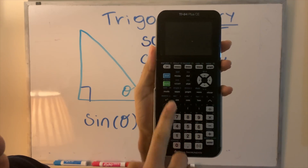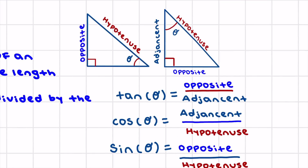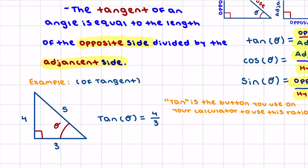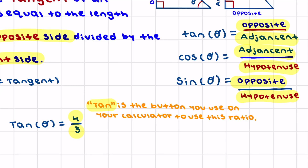Our last trig function is tangent. The tangent of an angle equals the length of the opposite side divided by the length of the adjacent side, so tan theta equals opposite over adjacent. Using the same 3-4-5 triangle, theta points opposite to 4 and is adjacent to 3, so tan theta equals 4 over 3. Tangent is also available on your calculator.